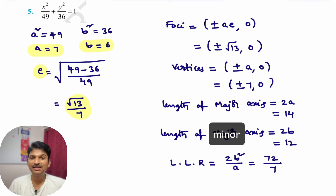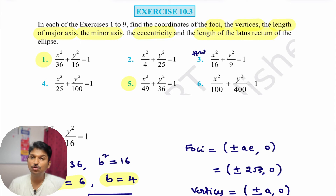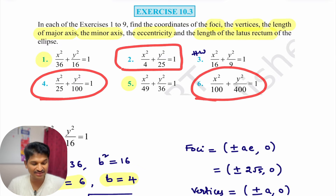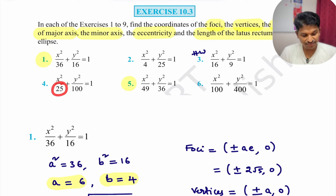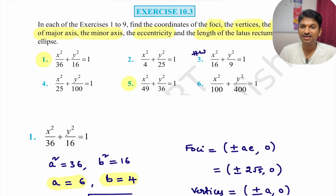I hope you are understanding these problems. Out of the 6 problems, I did problems 1 and 5, and gave problem 3 as homework. Now observe the remaining 3 questions — 2nd, 4th, and 6th. In these 3 problems, a is less than b, making them second type of ellipse. I will do any 2 of them.